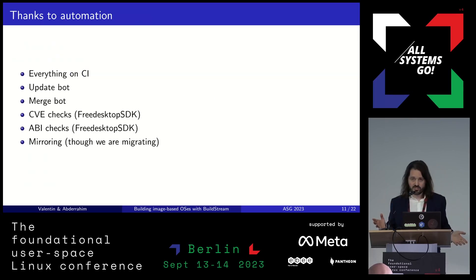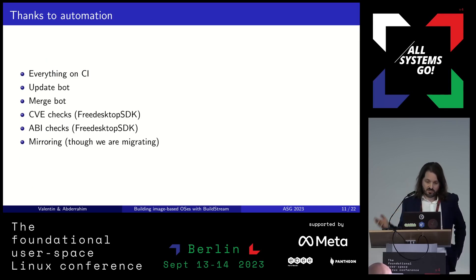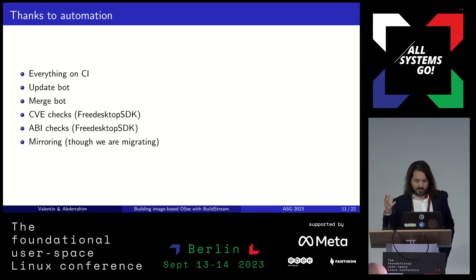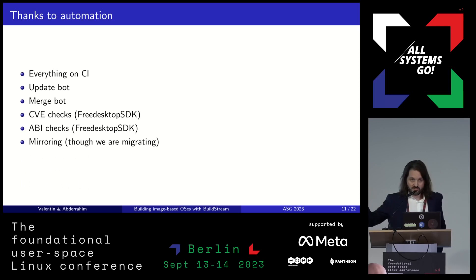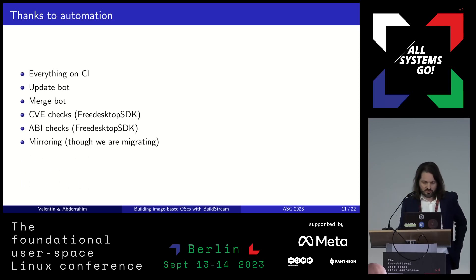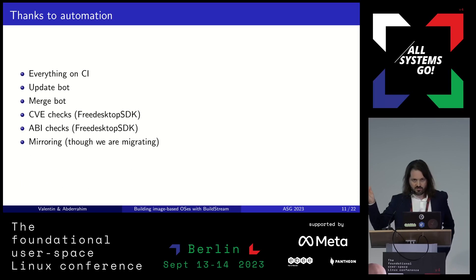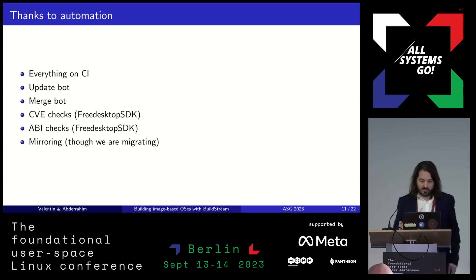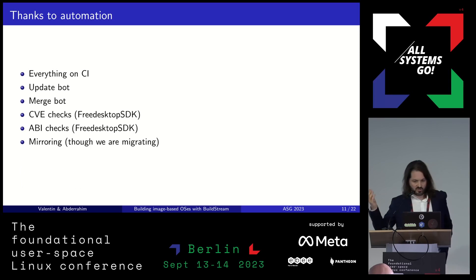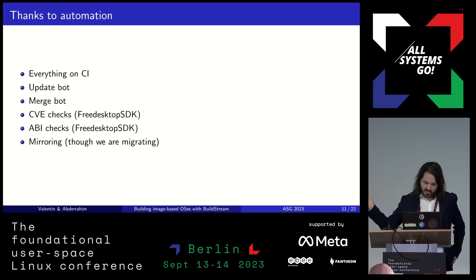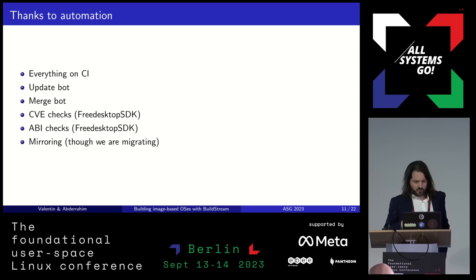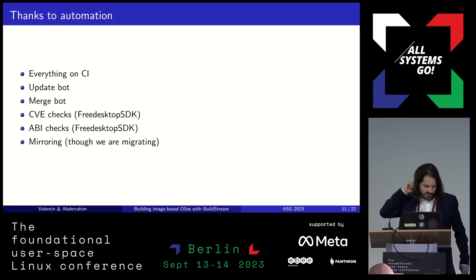We use a lot of automation because we are a small team. We have a lot of CI. We have some update bots that look at the metadata and see what can be updated with the latest version, looking at upstream. We have CVE checks that look at the metadata from Buildstream and check that we have patched everything correctly or updated to the right version. We have ABI checks, mostly for FreeDeskTop SDK and the Flatpak runtime. We also have some automation for mirroring; we are migrating to a new solution now.